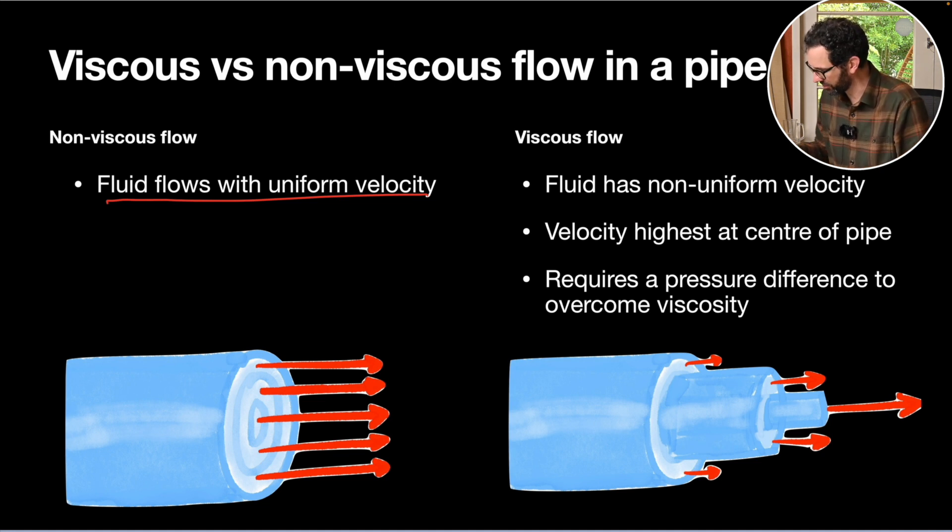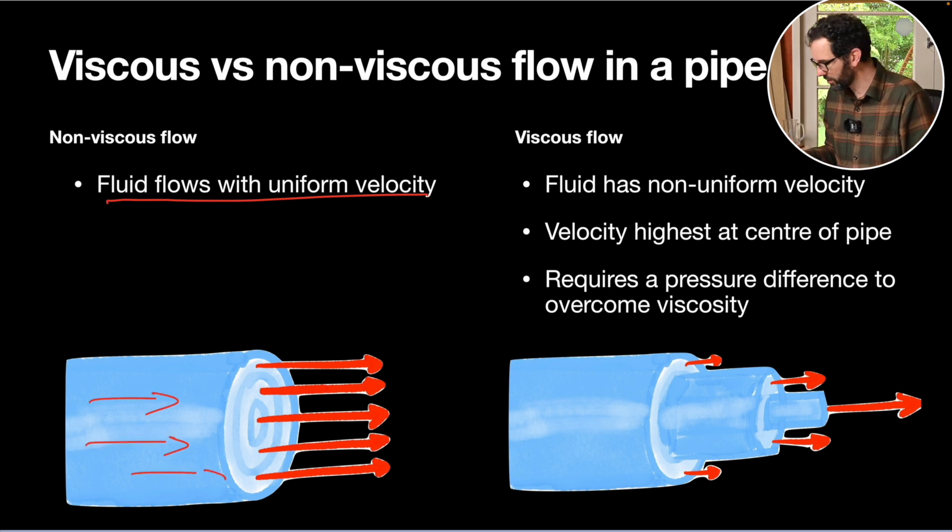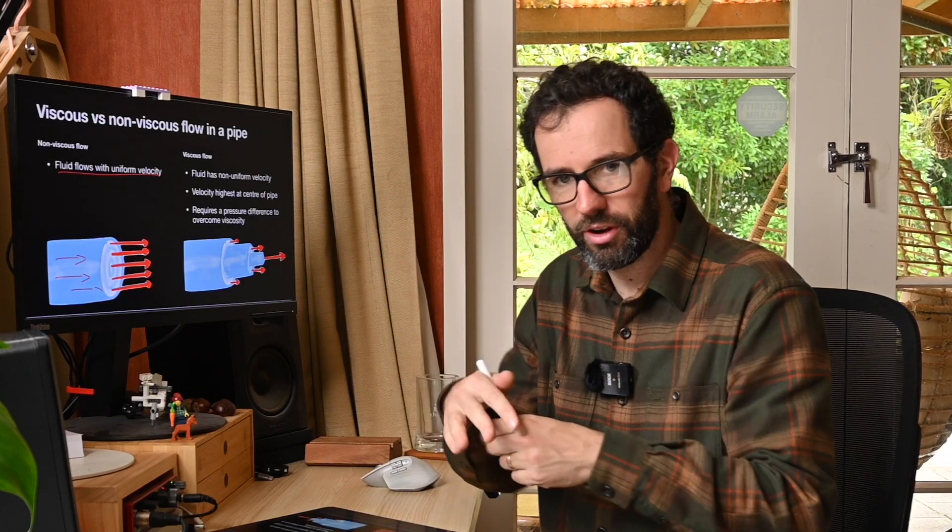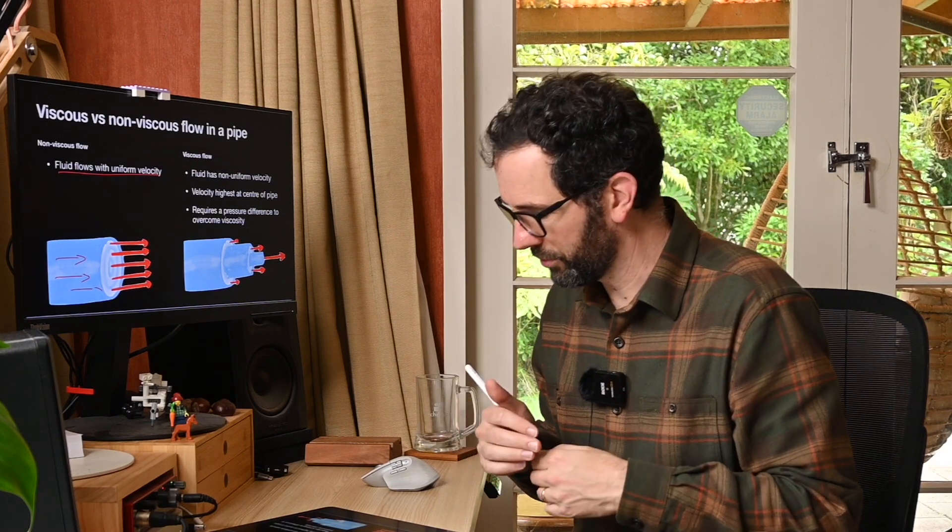If you imagine there's a liquid flowing down a pipe here and you were to take a cross section, then it would be nice layers. Everything's moving at the same speed. It's just moving as a solid block along. There's no stickiness or anything like that. It's just flowing very uniformly.